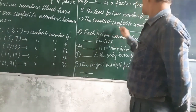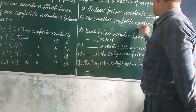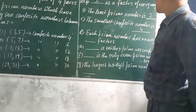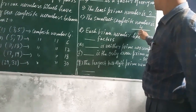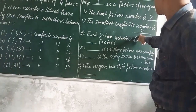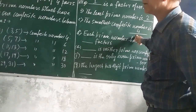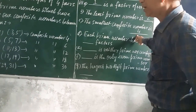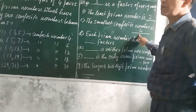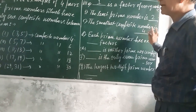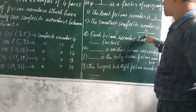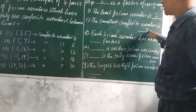Then, the smallest composite number is 4. Why is 4 a composite number? Because it has more than 2 factors — it is divisible by 1, by 2, and by 4. It has 3 factors, that is more than 2 factors. So, it is a composite number and the smallest composite number.